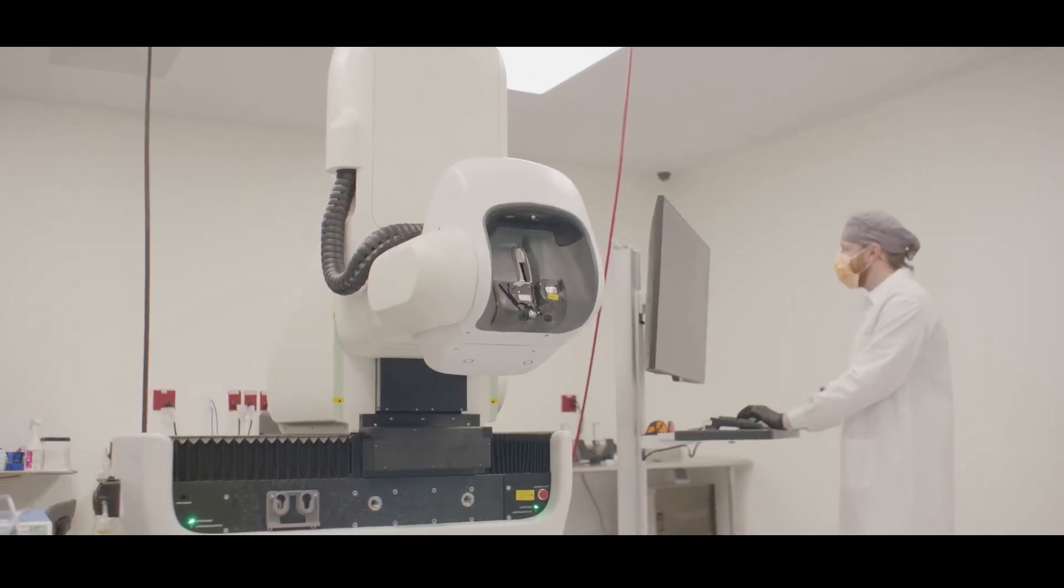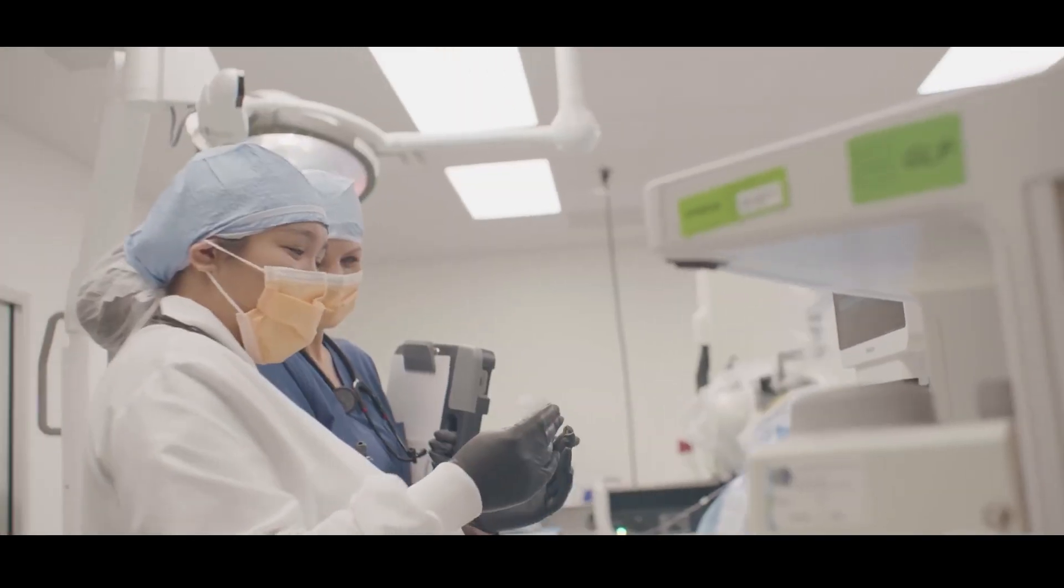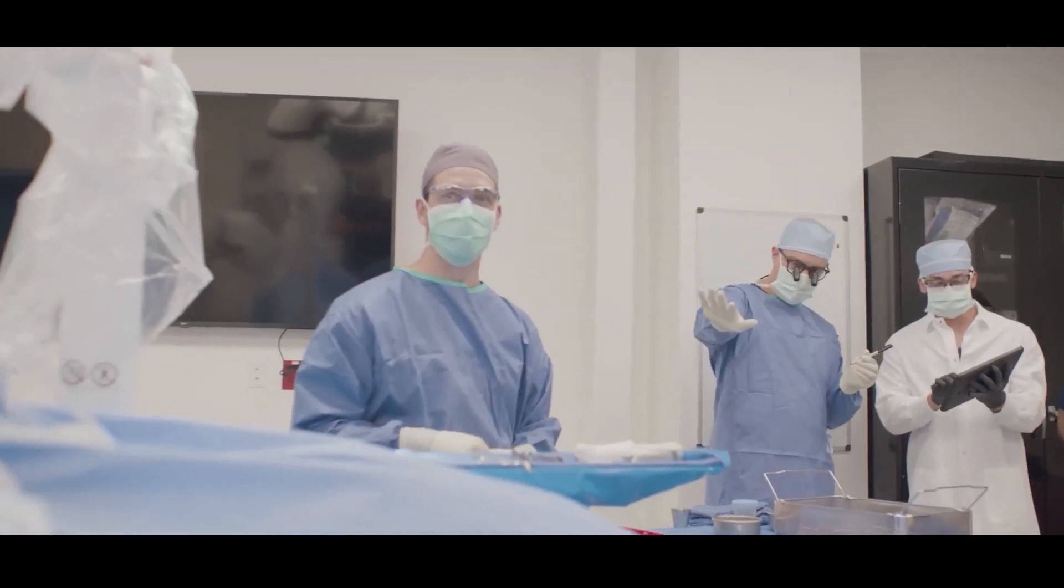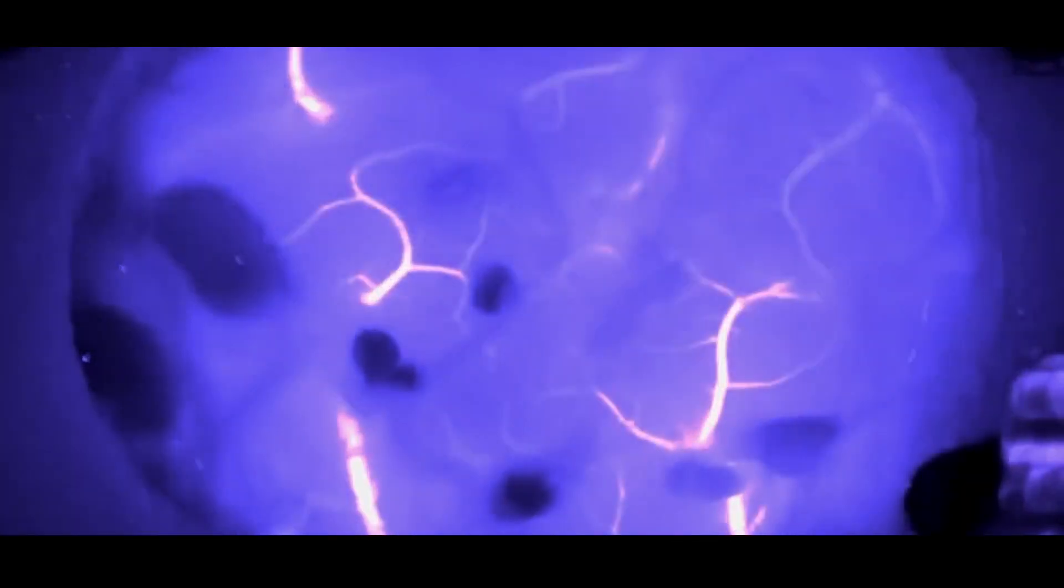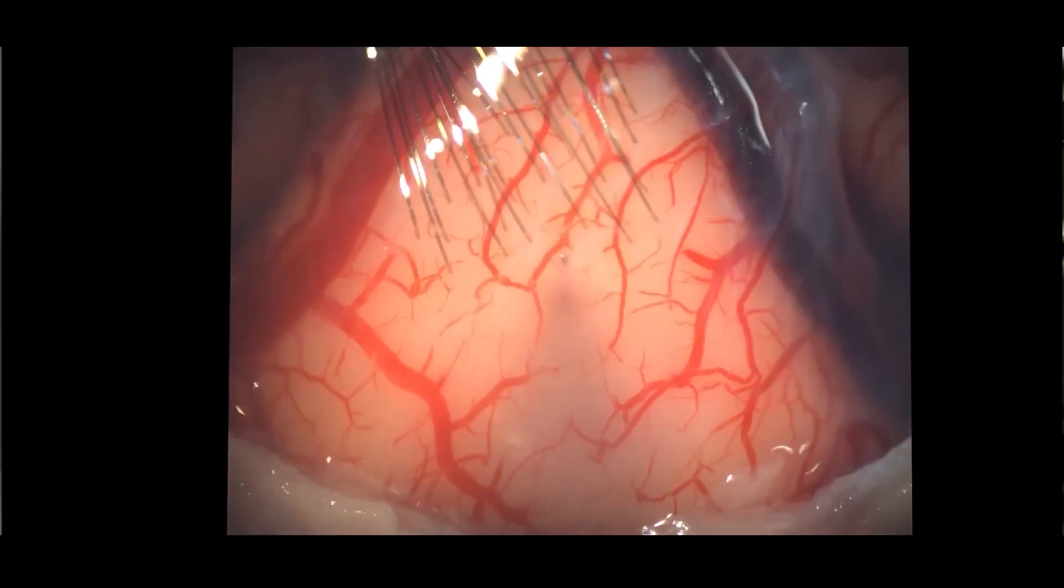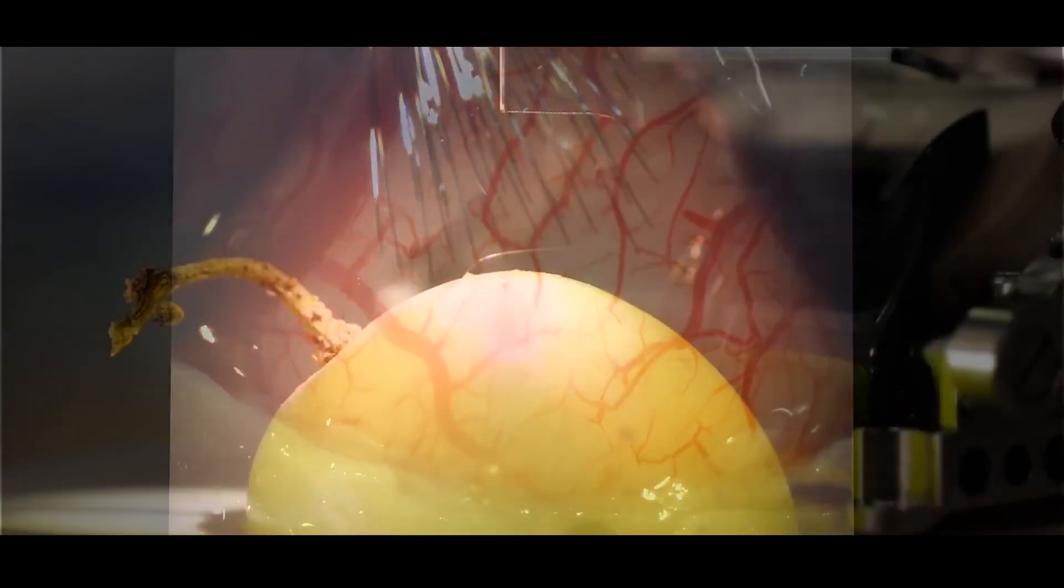Because of this, at the Neuralink factory, their design engineers can be seen working on the actual manufacturing line to build and test the products in real-time. This allows for a very quick iteration cycle time where the implant design can be completely changed in just a few days.